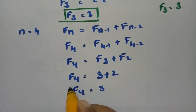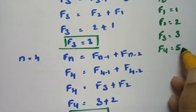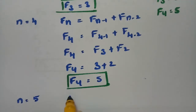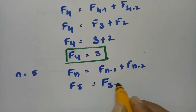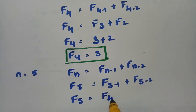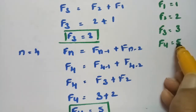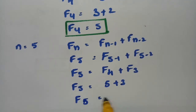With F4 = 5, we now compute F5. Substituting n = 5: F5 = Fₙ₋₁ + Fₙ₋₂ = F4 + F3. F4 = 5 and F3 = 3, so F5 = 5 + 3 = 8.